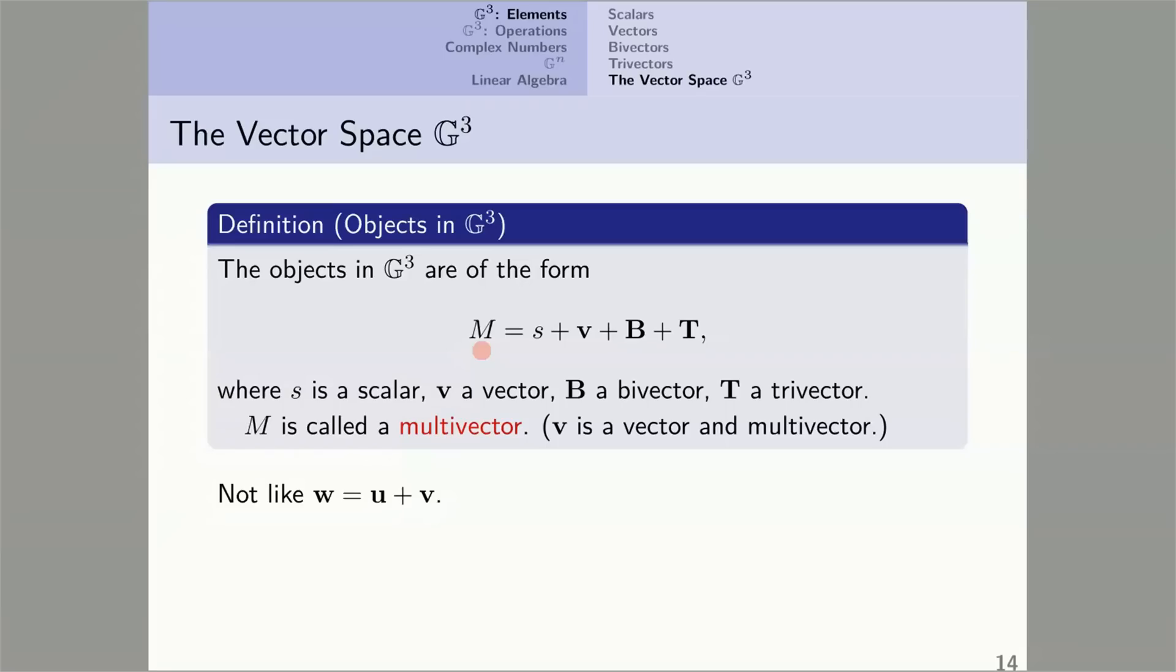Now, the sum forming M is not like the sum of two vectors, U and V, to form the vector W. If I have W, I cannot recover U and V. On the other hand, if I have this M, I can recover the scalar, the vector, the bivector, and the trivector. They're called the parts of M. It's rather like a complex number being formed of a real, A, and a pure imaginary, bi. The complex number Z is usually considered as a single object, but its real part A and its imaginary part B can be recovered.